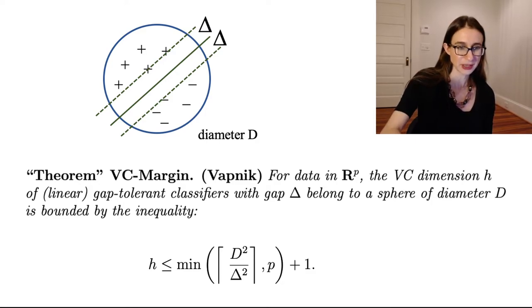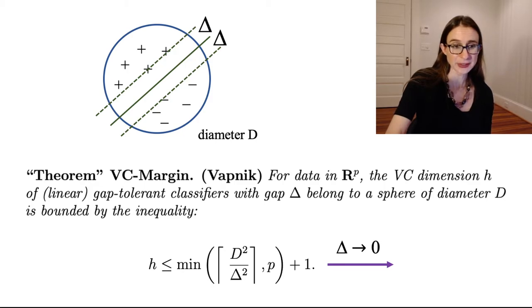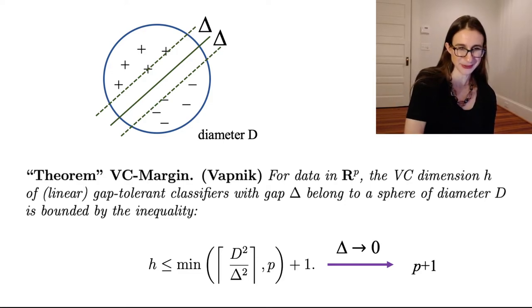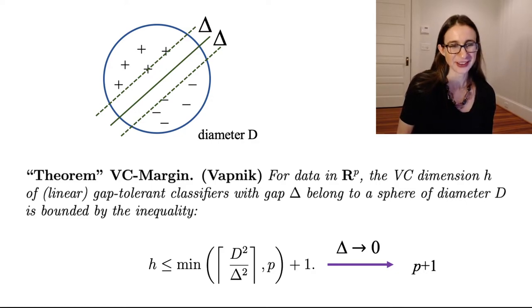if we have a large margin, we necessarily have a small VC dimension. And if you didn't have gap tolerance, like if you set that delta equal to zero, what happens is that the minimum of those two terms is actually just P. And so you end up back with a VC dimension of P plus one, which is exactly where we were before with the linear classifiers. So if you include the margin, you get something that's strictly better than if you don't.